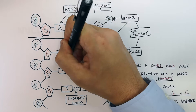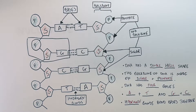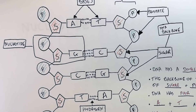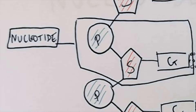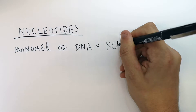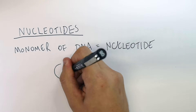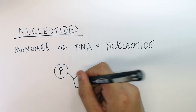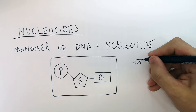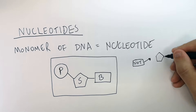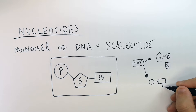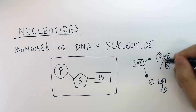A monomer of DNA is called a nucleotide. A nucleotide consists of a phosphate connected to a sugar, and the sugar connects to a base. Do not get this wrong — you can be asked about this in the exam. It is not sugar-phosphate-base, and it is not phosphate-base-sugar. The correct arrangement is phosphate connected to sugar connected to base.